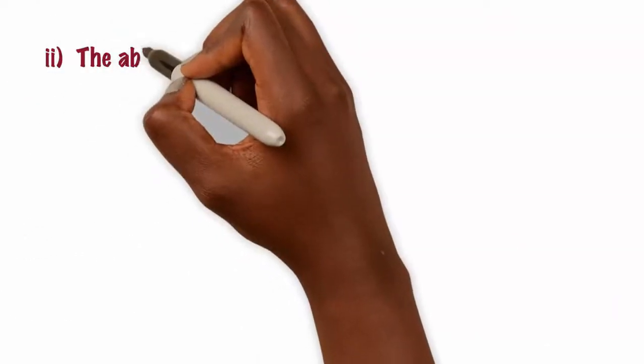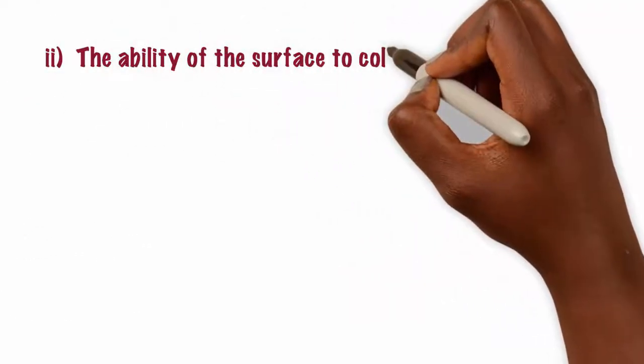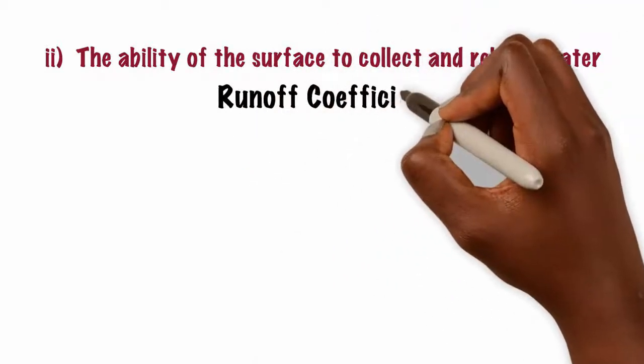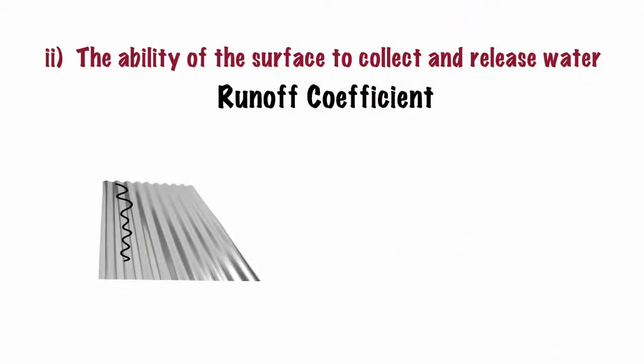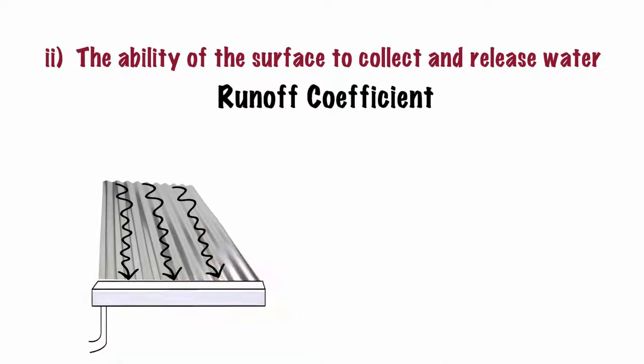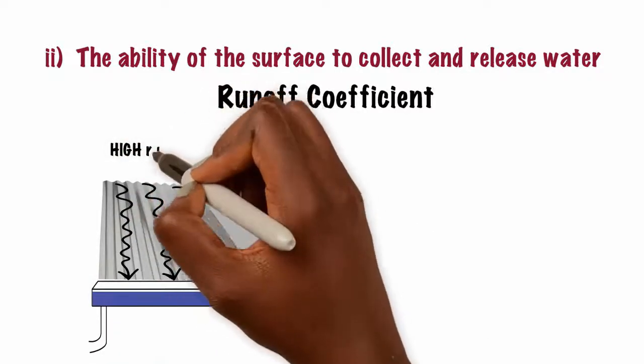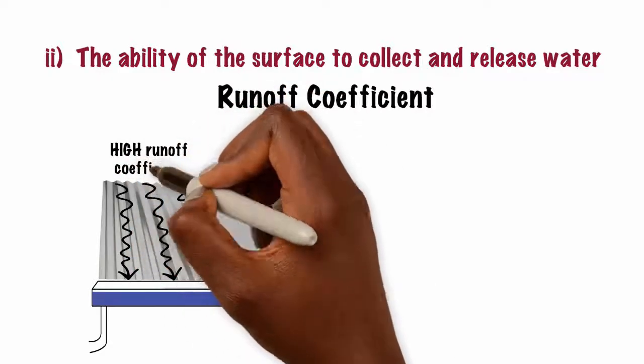Second, the ability of the surface to collect and release water. This is commonly called runoff coefficient. For example, iron roofs can easily collect and release rainwater into conveyance channels. In this case, the runoff coefficient for an iron roof is relatively high.